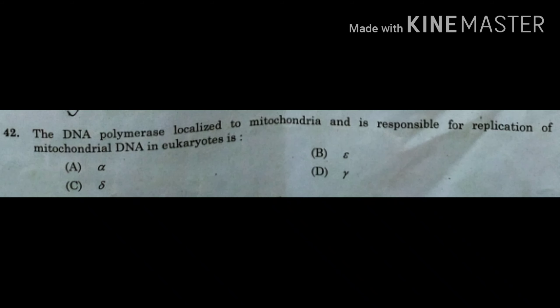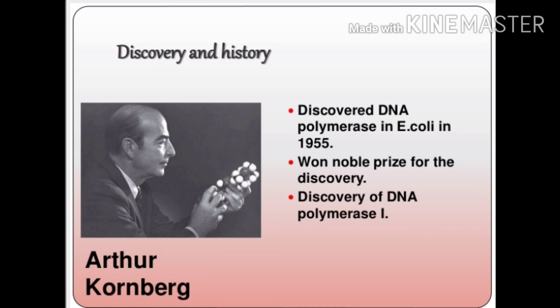The next question: The DNA polymerase localized to mitochondria and responsible for replication of mitochondrial DNA in eukaryotes is: A. alpha, B. epsilon, C. delta, D. gamma. You know that the DNA polymerase enzyme is the key enzyme in DNA replication. It was first discovered by scientist Arthur Kornberg; hence DNA polymerase enzyme is also known as Kornberg enzyme. The actual DNA polymerase enzyme discovered by him was DNA polymerase I, and he got the Nobel Prize for this great discovery.